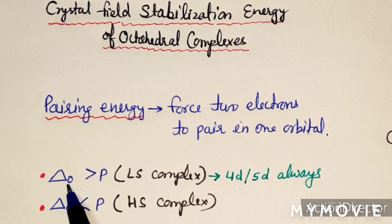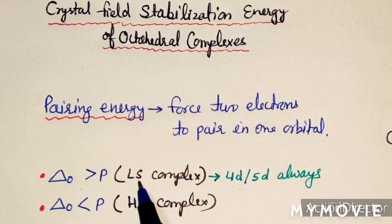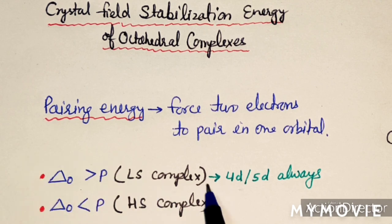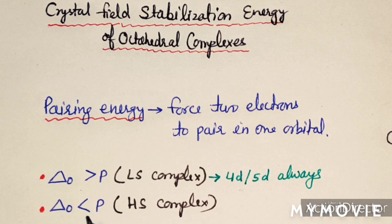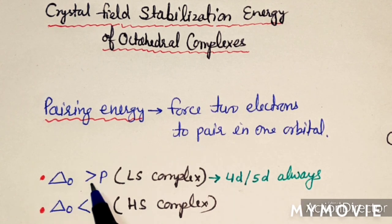If delta O is greater than pairing energy P, a low spin complex is formed. This condition always holds for 4D and 5D series complexes. For 3D transition metal complexes, if delta O is greater than P it is a low spin complex, and if delta O is less than P it is a high spin complex.